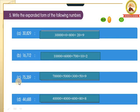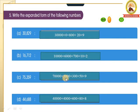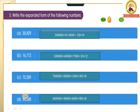Now see your C: 75,359. 7 is in which place children? 7 is in the 10,000th place, so write down 70,000. 5 is in the 1000th place, so write down plus 5,000. 3 is in the 100th place, so write down plus 300. Plus 5 is in which place? 5 is in the 10th place, so write down plus 50. Plus 9 is in the 1st place, so write down plus 9.